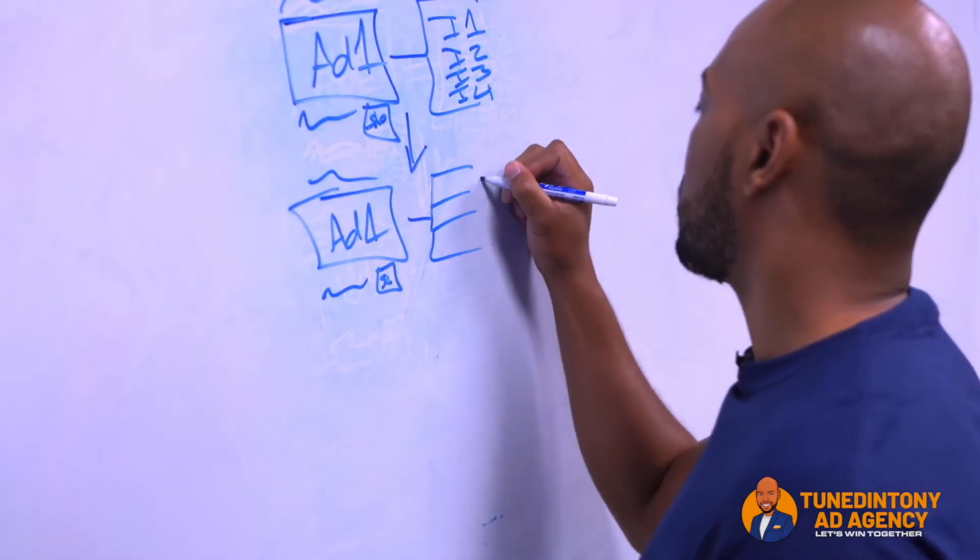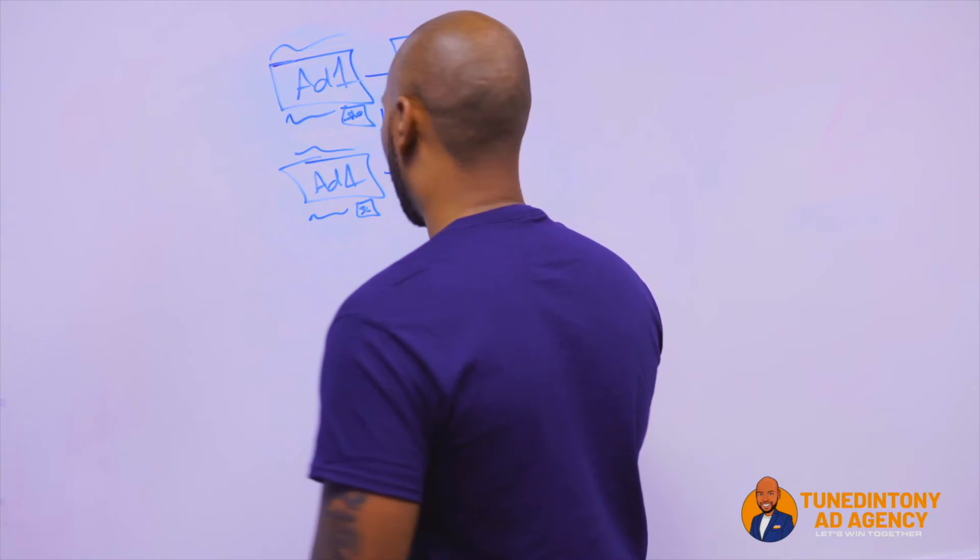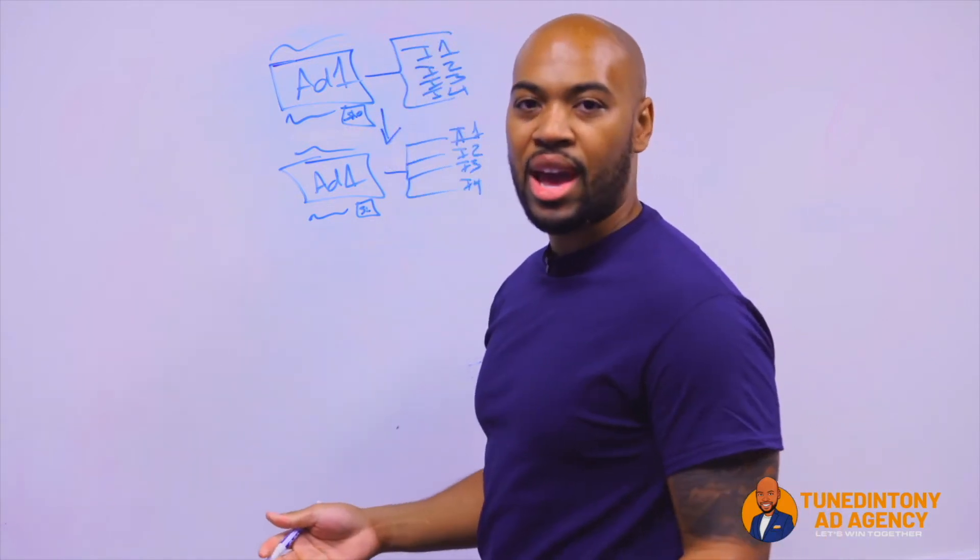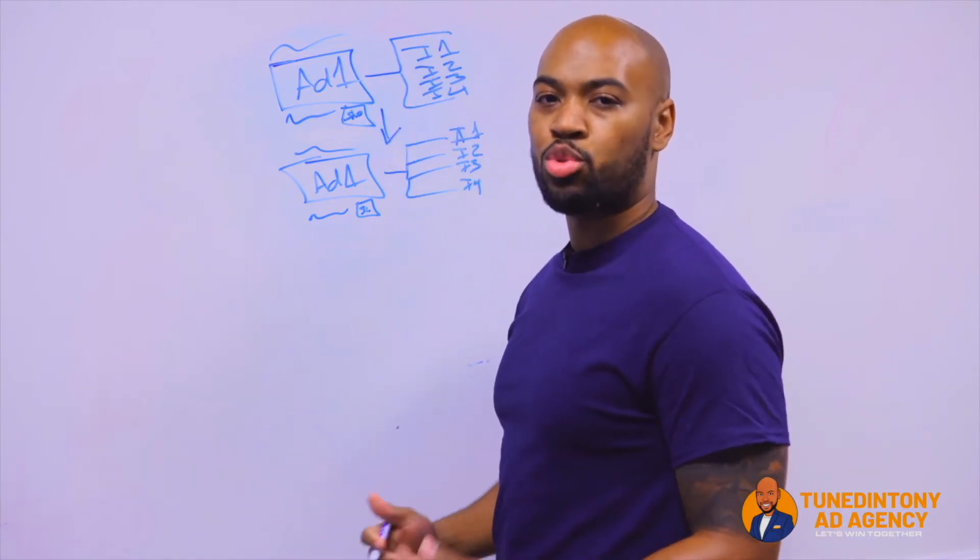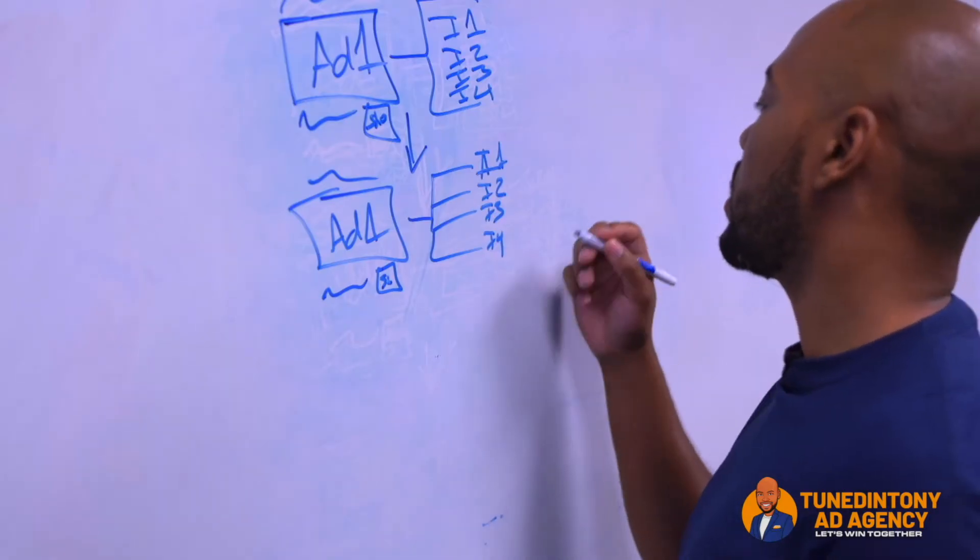So this is one of the first things that we do for scalability. So we got interest one, interest two, three, and four. So now we're going to publish this ad, let's let this ad run for about three to five days.